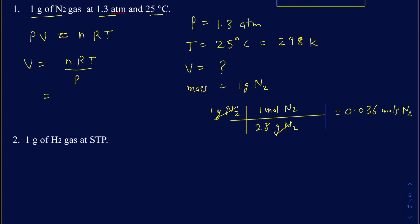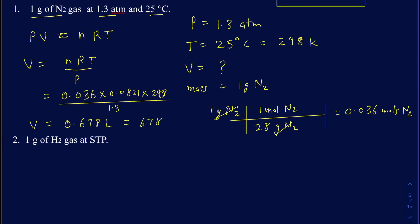Now plug everything in: V = (0.036 × 0.0821 × 298) / 1.3, which gives 0.678 liters. If converting to milliliters, that would be 678 milliliters. Make sure you're able to move quickly between milliliters and liters.